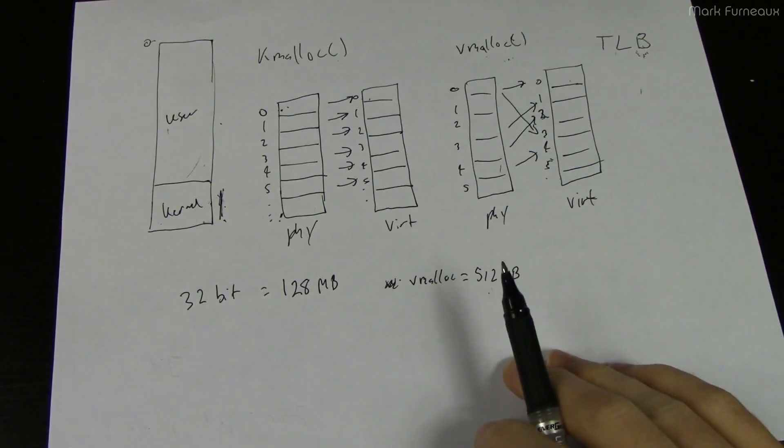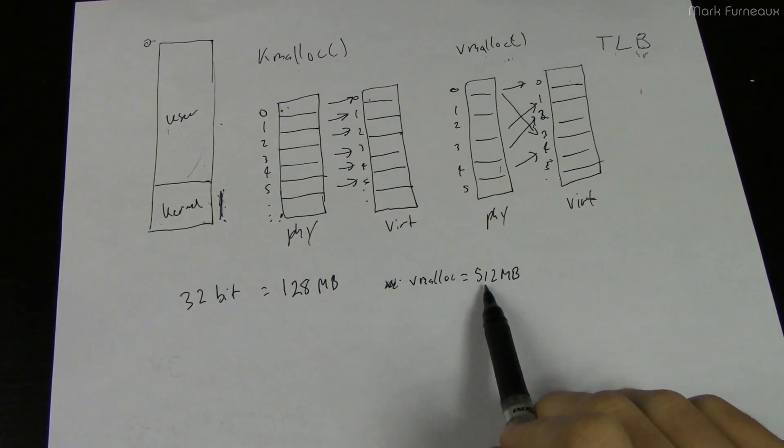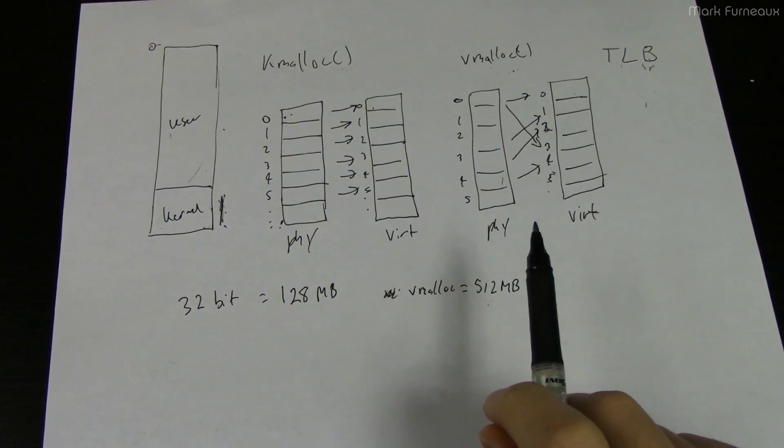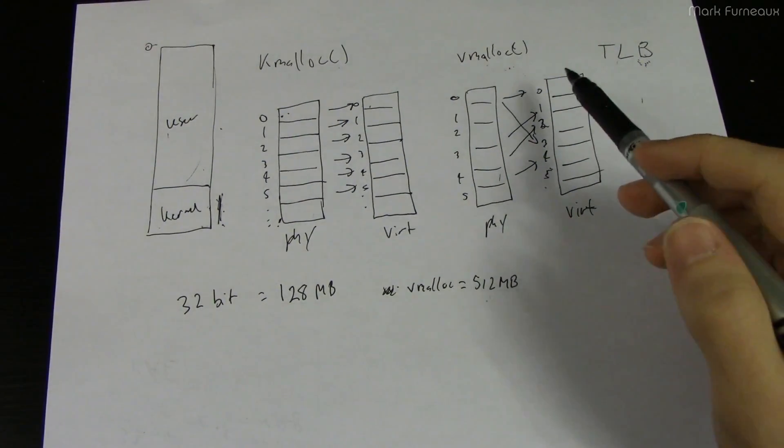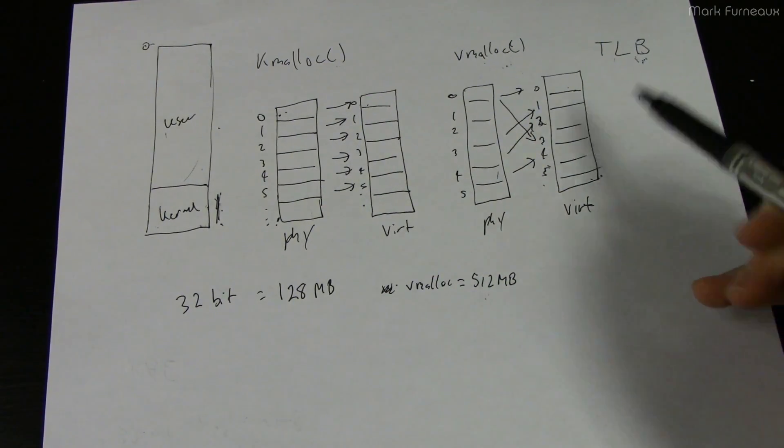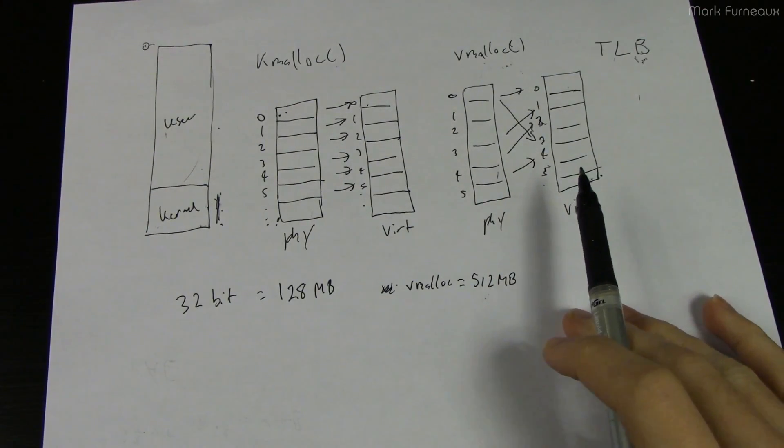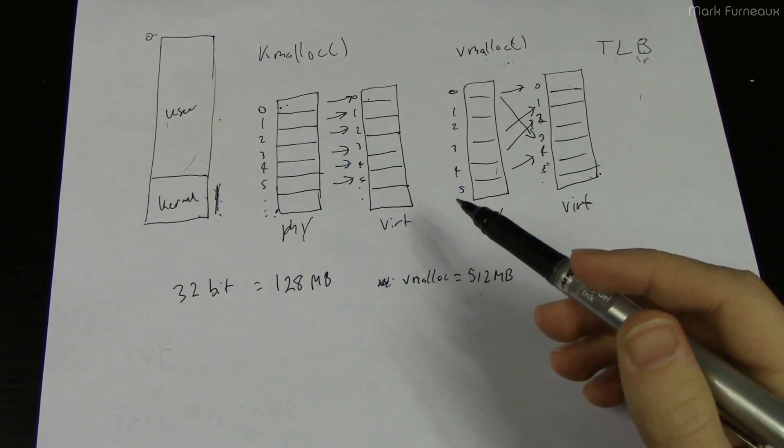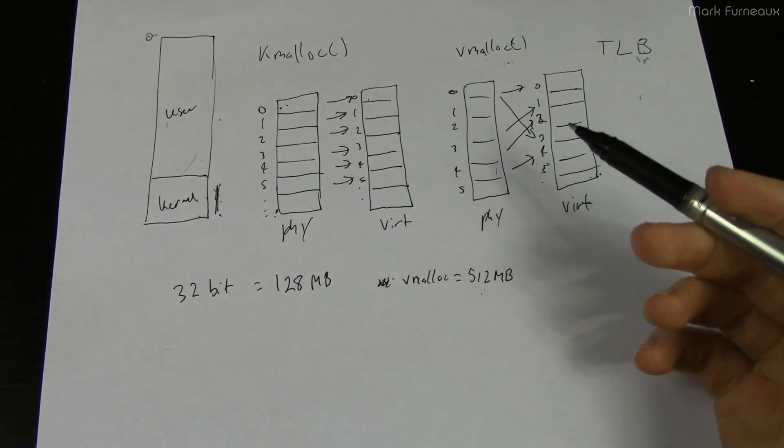And the reason is because it's not actually the amount of physical memory available that matters. It's the address space that matters. You see vmalloc is contiguous in virtual address space and this is the big problem. This is kind of like what happens, it's kind of like fragmentation on a hard drive.